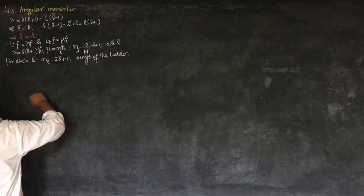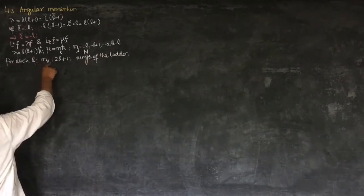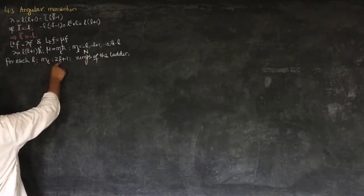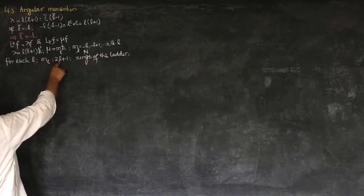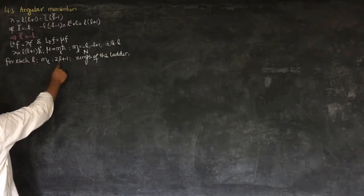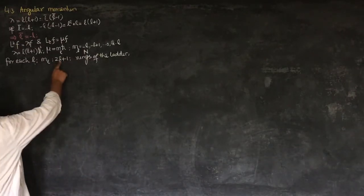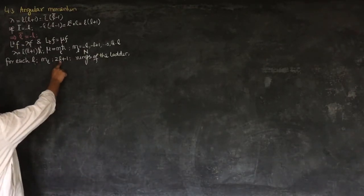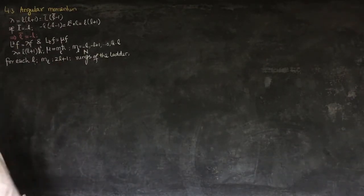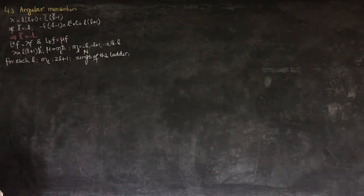There are three runs of l. If l is equal to 0, we will have one run. And when l is equal to 2, we will have five runs of l.